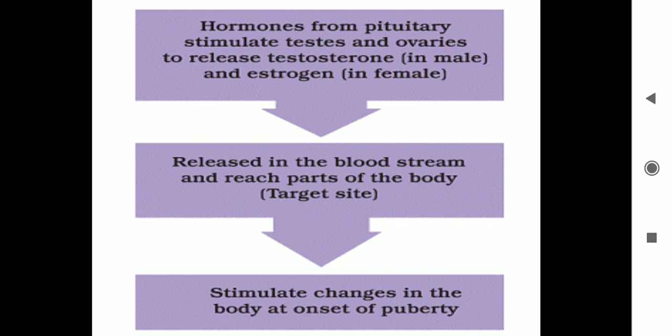Here is just a flow chart: hormones from the pituitary stimulate the testes and ovaries to release testosterone in males and estrogen in females.